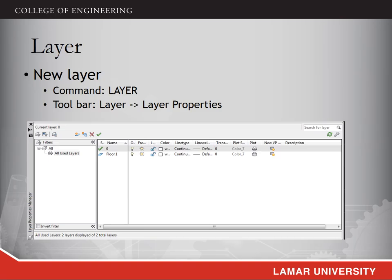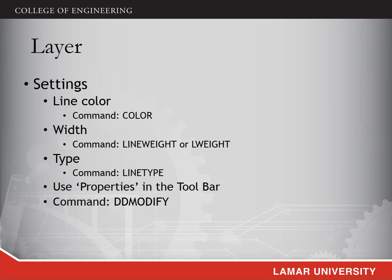To generate a new layer, you can type the command 'layer' in the command window, or go to the toolbar and find the layer property. It will pop out a layer property window. You can then add a new layer by clicking the new layer button. A new layer will be generated, and you can modify its name. You can also add more layers by clicking the icon.